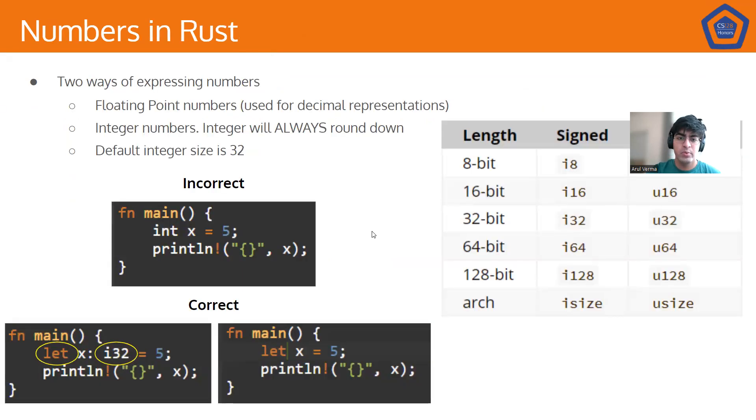So, integers are the way we express numbers in Rust. There are two main ways other than integers, which are floating points and doubles, but both those are used for decimal representation. Whereas integers are always used for the classic integer representation. The key thing to note about integers is because they don't store decimals, they inherently truncate decimals. So let me move my camera so you can take a look.